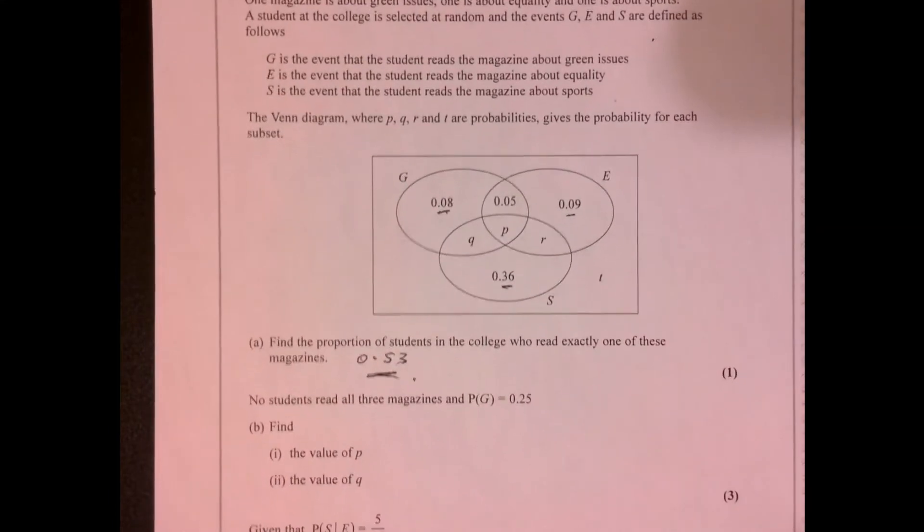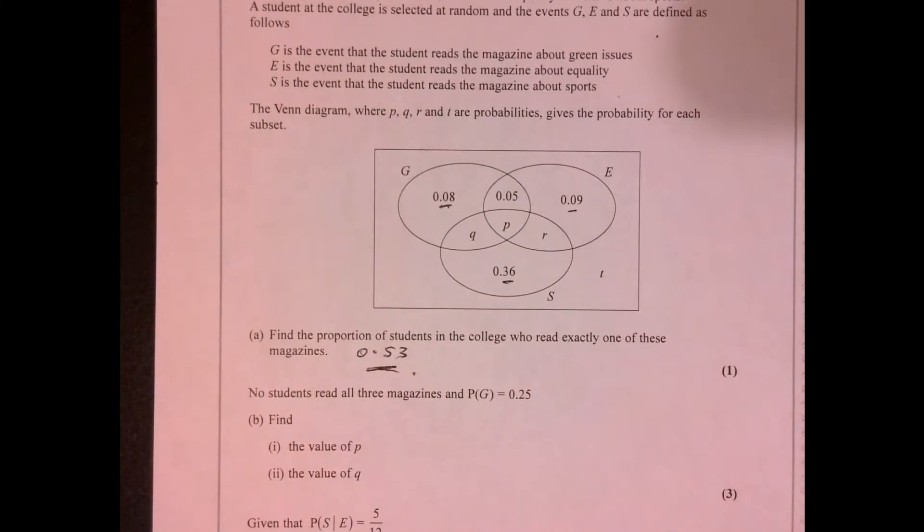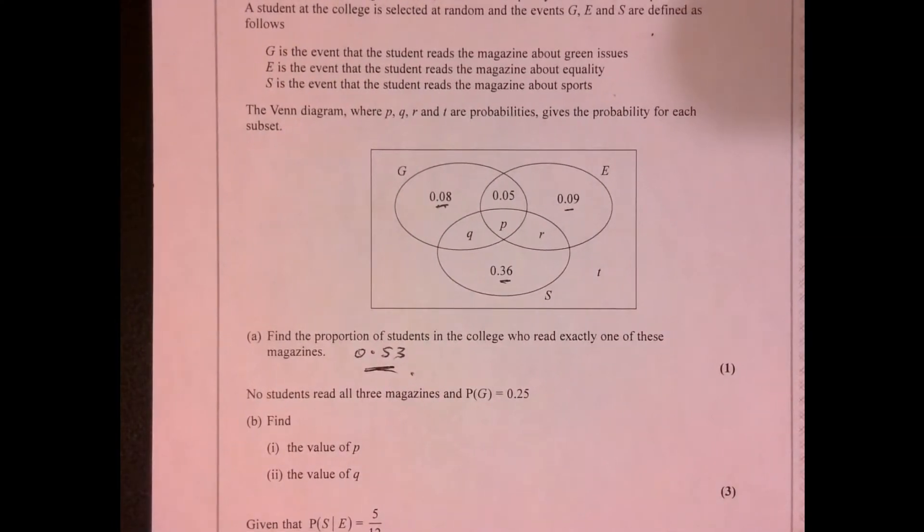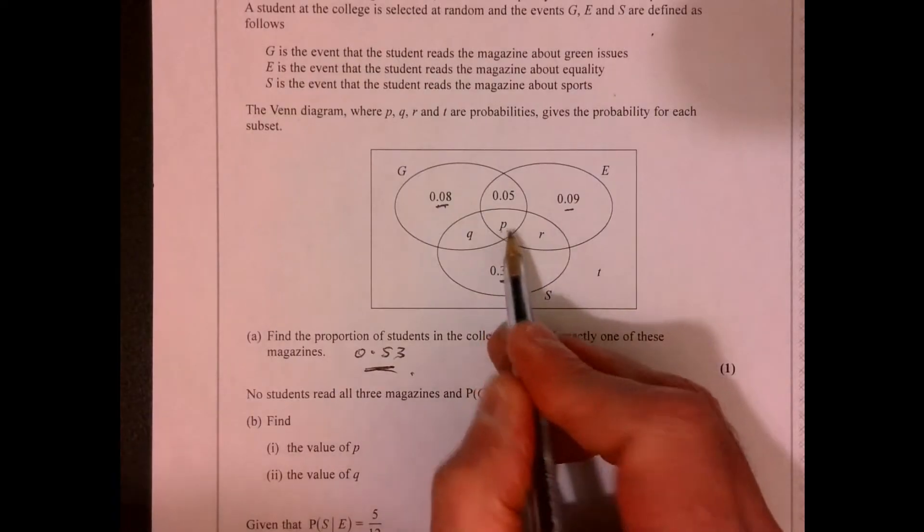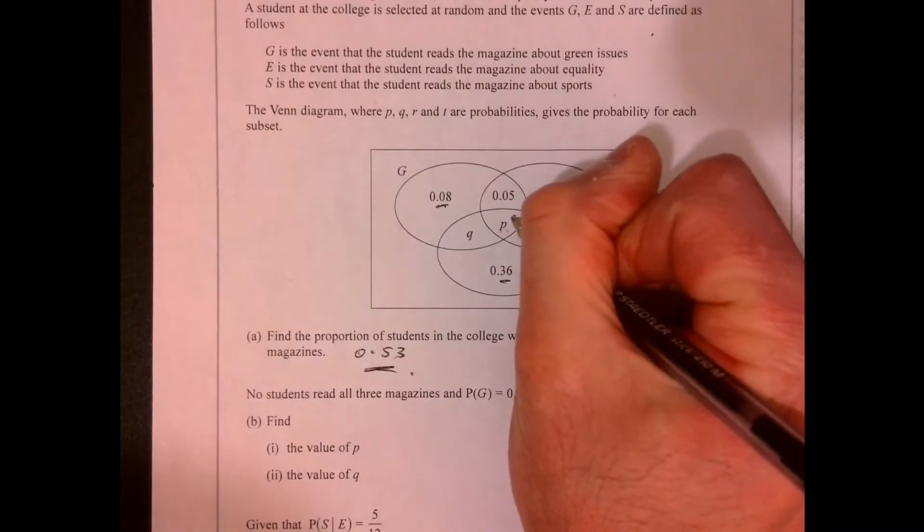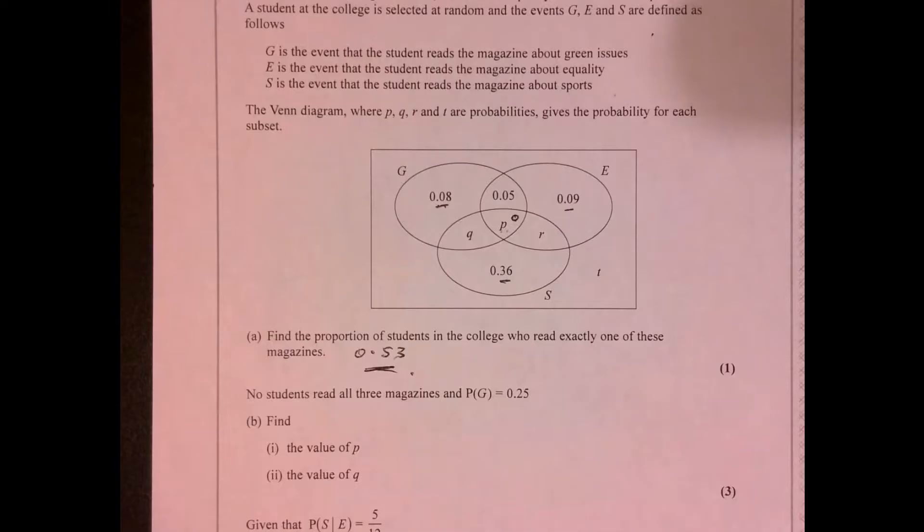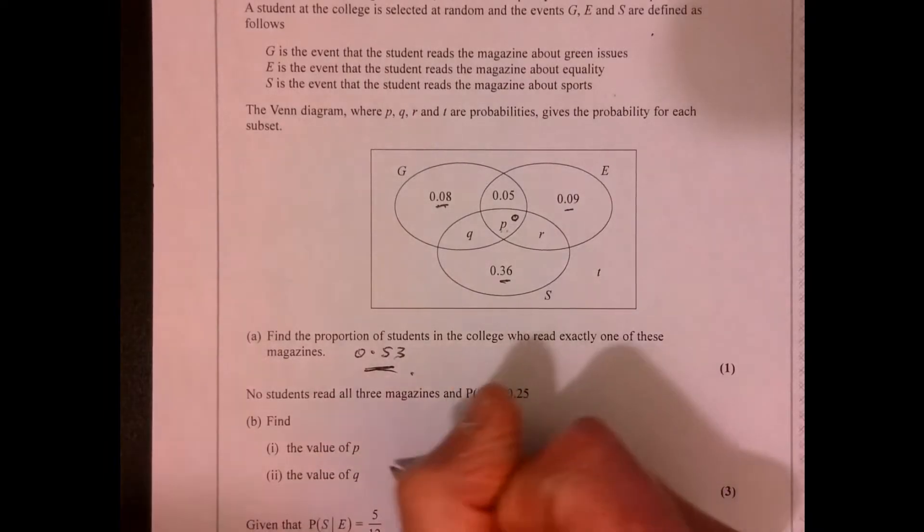Next, it says no students read all three magazines. So that bit there is 0. So find the value of P. P equals 0.